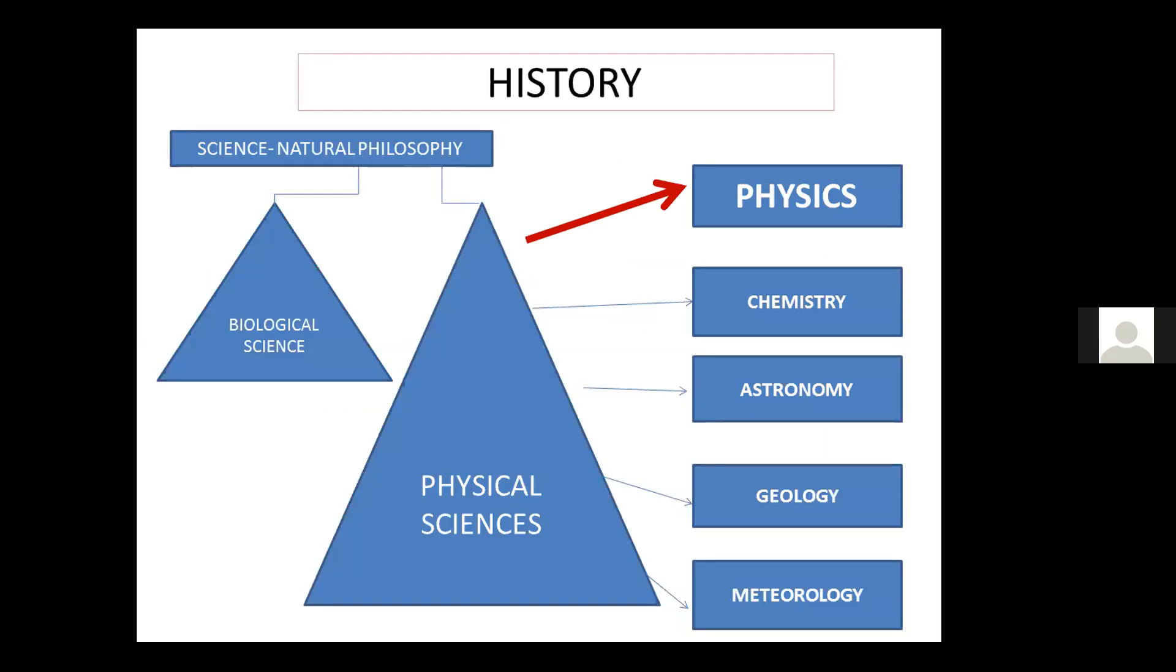Man has been curious to know about nature. His quest to gain knowledge came from observation and experimentation, which is called science. Till the knowledge increased, all material objects were studied under a single subject called natural philosophy. But as the thirst to gain knowledge increased, it got divided.